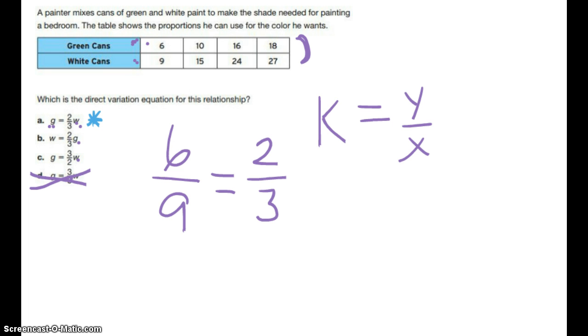Are my white cans 2 thirds of my green cans? That can't be it. Because I know that my white cans are bigger than my green cans. So, I can't say that the white is 2 thirds of the green. I know that that's not going to be it.